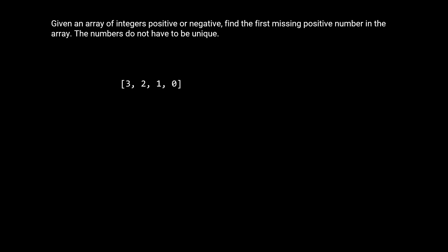So if this is our given input array, the positive numbers 1 through 3 are present, so 4 is the first missing positive number, and that's what we would return. And if this were our input array, the positive numbers 1 and 2 are present, so the first missing positive number is 3.